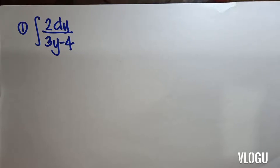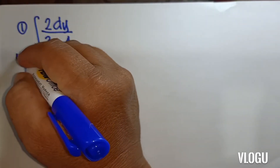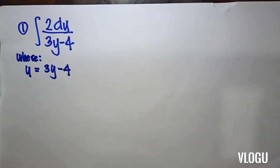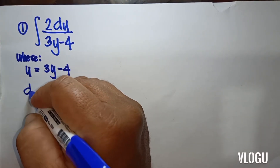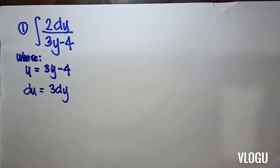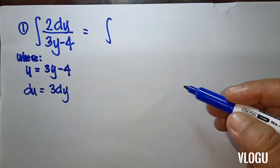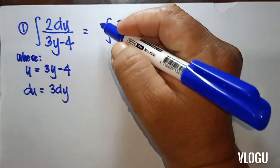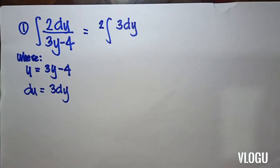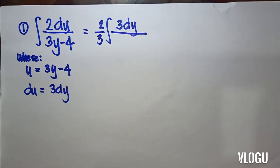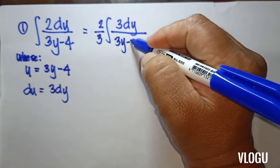For example one, we have the integral of 2dy over 3y minus 4. Here, u is equal to 3y minus 4, and du is equal to 3dy. We bring 2 outside, and since we have 3 here, we divide by one third, so we multiply by one third.